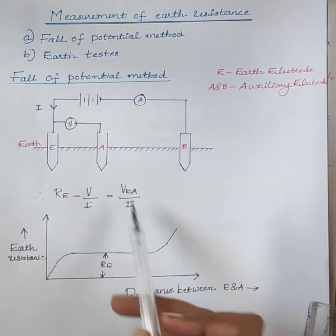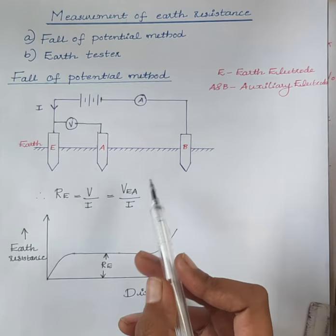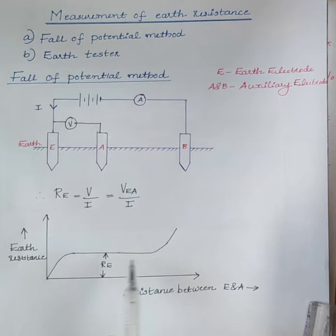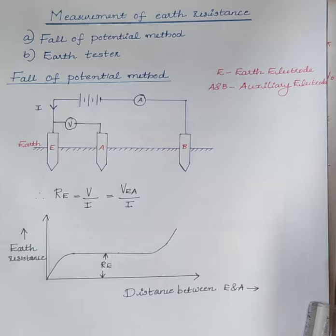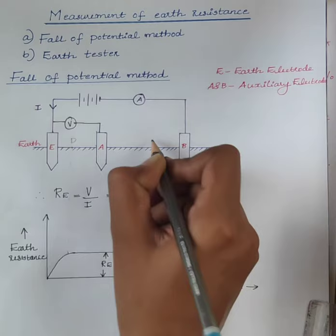Thus, the placing of the auxiliary electrode A is very important, and errors may occur due to incorrect placing of the electrode. Therefore, the correct value of earth resistance R_E is obtained when auxiliary electrode A is at such a distance that the resistance lies on the flat part of the curve. Suppose this flat region spans from point D to point C — we will get the correct value of resistance if we place the auxiliary electrode between D and C.